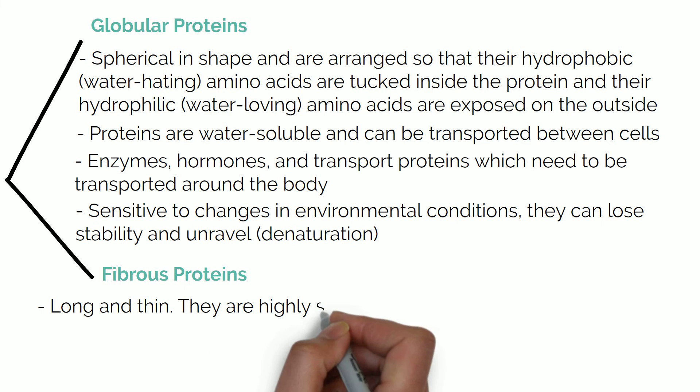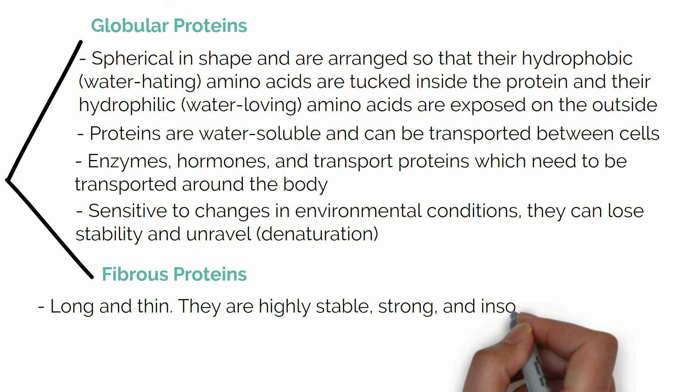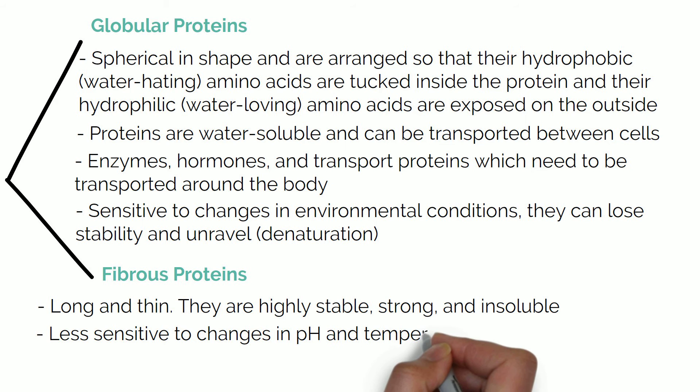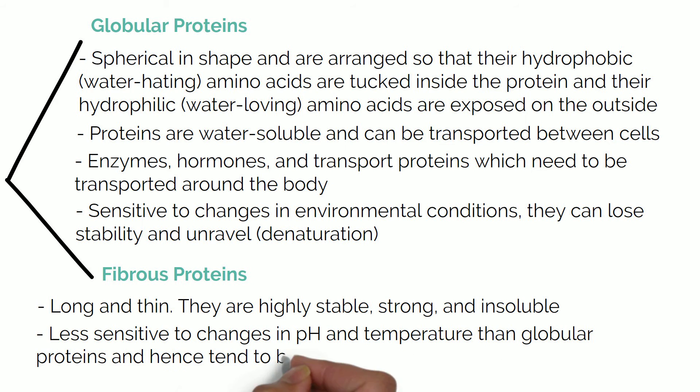Fibrous proteins are long and thin proteins. Their primary structures consist of repetitive sequences of amino acids. Fibrous proteins are highly stable, strong and insoluble. These types of proteins are less sensitive to changes in pH and temperature than globular proteins and hence tend to be structural proteins, providing support to the cell. Examples of fibrous proteins are collagen, keratin and elastin.